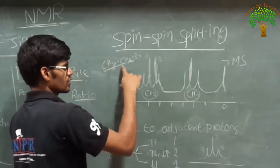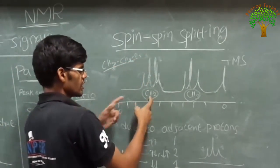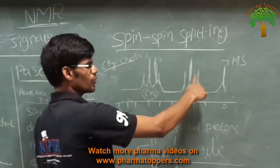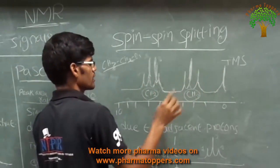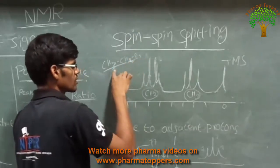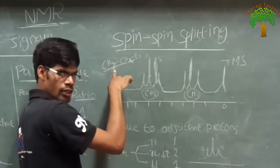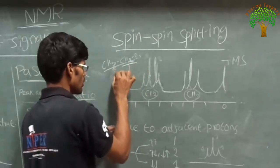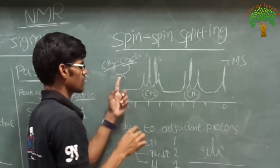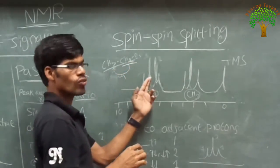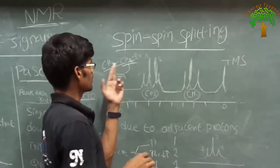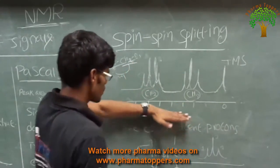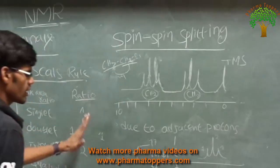For example, CH3CH2Br. As discussed earlier, CH2 will give a quadruplet and CH3 will give a triplet. For CH3, adjacent is CH2 with 2 protons — so n plus 1 means 2 plus 1 gives a triplet. For CH2, n plus 1 means 3 plus 1 gives a quadruplet.